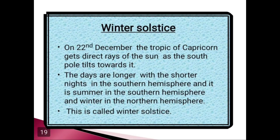Now we are going to learn about the winter solstice. First, at this time, the southern hemisphere is inclined towards the sun while the northern hemisphere stays away from the sun. Second, sun rays fall vertically on the Tropic of Capricorn and slanting on the Tropic of Cancer. Third, since the sun rays fall vertically at the Tropic of Capricorn, a larger portion of the southern hemisphere gets light. So it is summer in the southern hemisphere with longer days and shorter nights, while winter is experienced in the northern hemisphere.